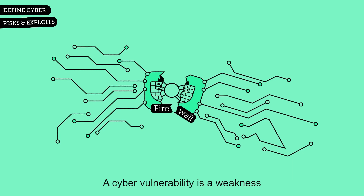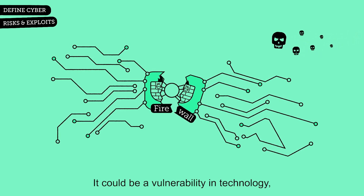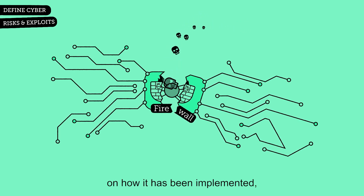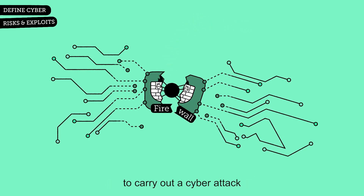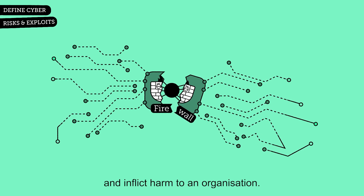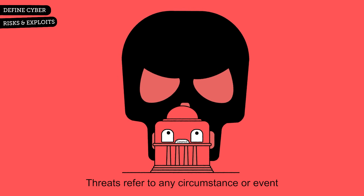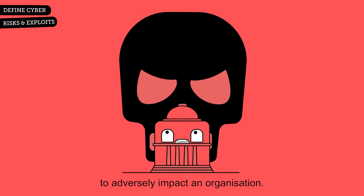A cyber vulnerability is a weakness in an information system to attack. It could be a vulnerability in technology, procedures and controls, or in how it has been implemented, which allows a malicious actor to carry out a cyber attack and inflict harm to an organisation. Threats refer to any circumstance or event that has the potential to adversely impact an organisation.